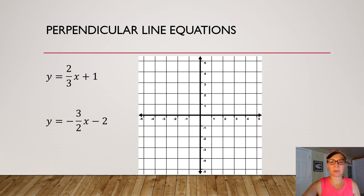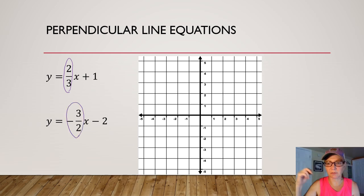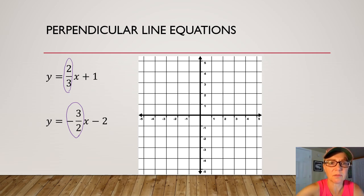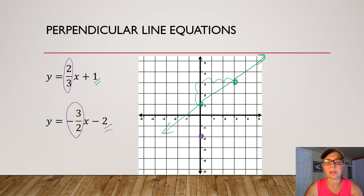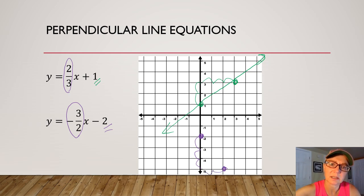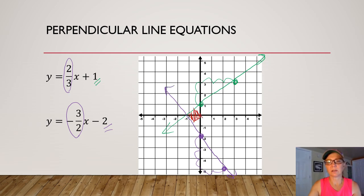These equations represent perpendicular lines. If you take a look at the slopes, this slope is positive two thirds and this slope is negative three halves — opposite reciprocals. The y-intercept of the first line is one, and the slope is up two and over three. There's a second point; connect them. The second equation has a y-intercept of negative two, and then we go down three and over two to the right to get a second point on the line. Connect them, and you can see that these two lines are perpendicular.